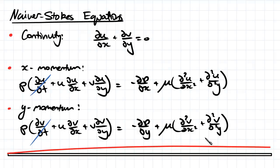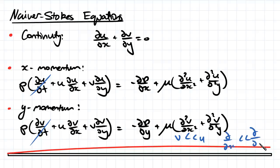When we have uniform flow over a plate, we're primarily dealing with velocity in the x-direction. Velocity u is significantly bigger than our velocity in the y-direction, and the changes in the velocity in the x-direction are primarily with respect to y. Therefore our partial derivative with respect to x is significantly smaller than with respect to y, and the second partial derivative with respect to x is essentially zero and we can cancel that out.